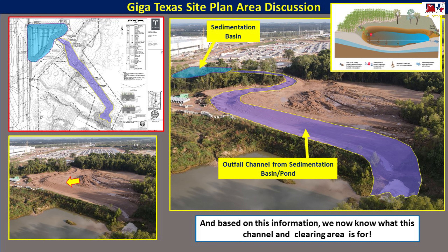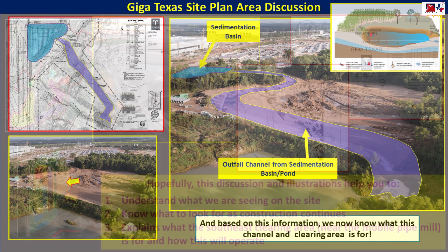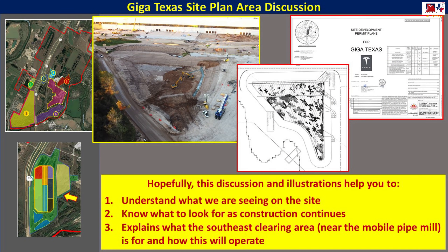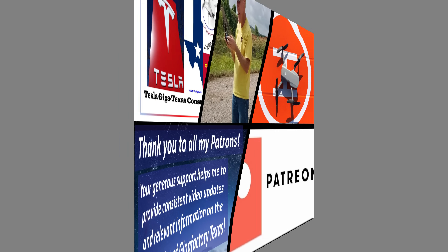Based on this information, we now know what that southeast clearing area is for. So that's a quick review of what's going on in the east side — that sedimentary basin area and how it would operate. I hope that the discussion and illustrations help you understand what we're seeing on the site, what we're going to see as construction continues, and what that southeast clearing near the mobile pipe mill is for.